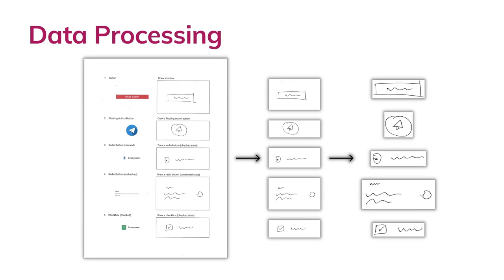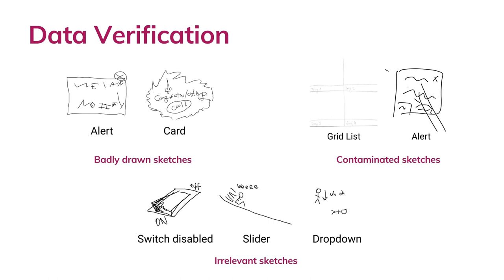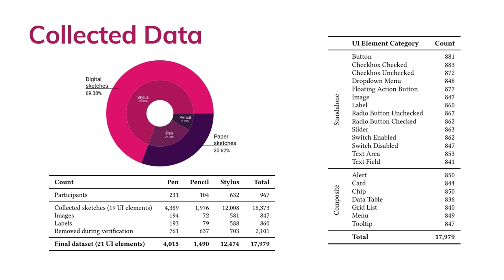Once we collected all the sketches, we started data processing. We created a script that takes the paper questionnaire as input and uses contour detection to return labeled, close-cropped element sketches. We then manually verified these sketches and removed badly drawn, contaminated, and irrelevant sketches to finalize the dataset. This dataset contains around 70% digital sketches and 30% paper sketches, and we tried to keep the classes balanced with about 850 images for each UI element category.